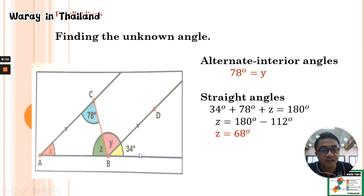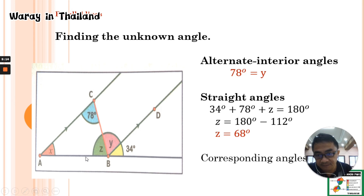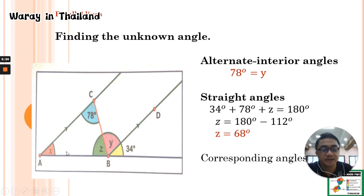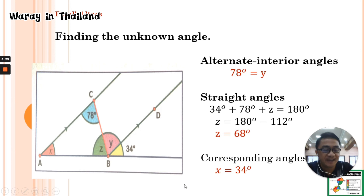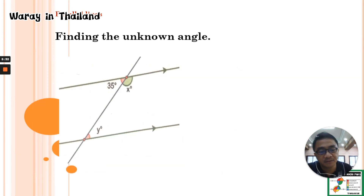For the last angle in this problem, angle X, we apply corresponding angles. The transversal line AB crosses the parallel lines, so angle X corresponds to the given 34 degrees. Therefore angle X equals 34 degrees by means of corresponding angles.